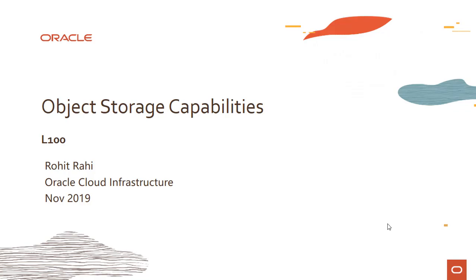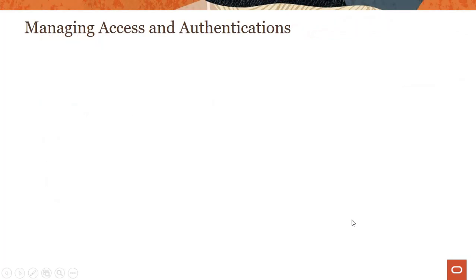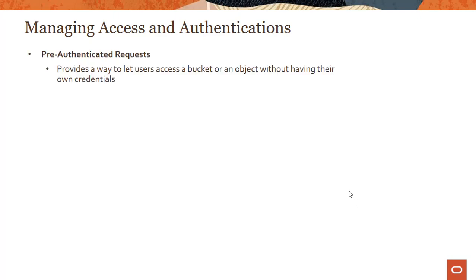Hi, everyone. Welcome to this module on object storage capabilities. In this module, we will look into various advanced features such as pre-authenticated request, cross-region copy, multi-part upload, etc. So let's first start with managing access and authentication. In the previous demo, we uploaded an object to a standard bucket and we were able to retrieve the object by changing the access level from private to public. So let's look at some of the other things we can do with objects in the OCI object storage service.